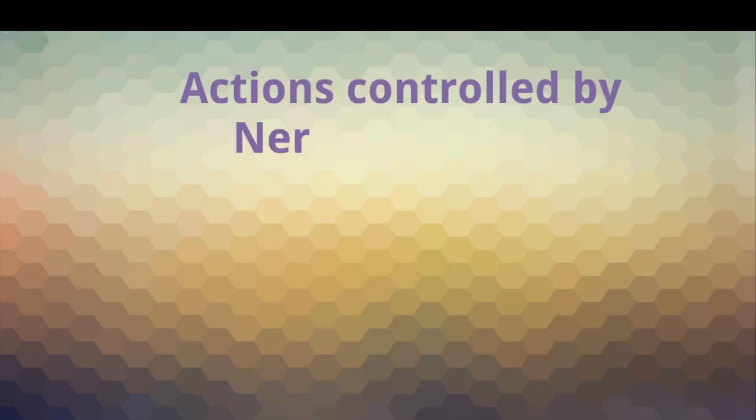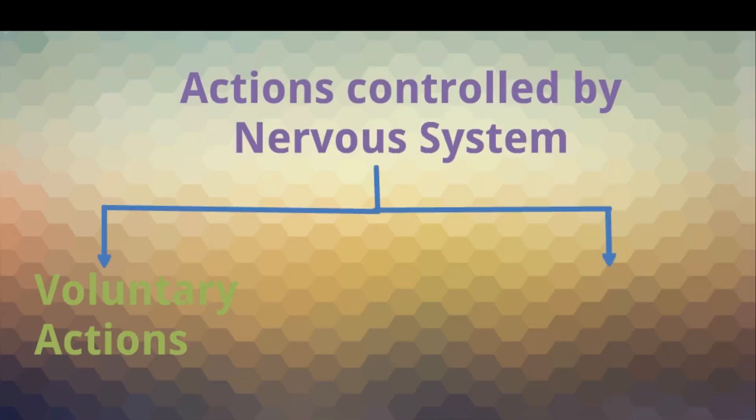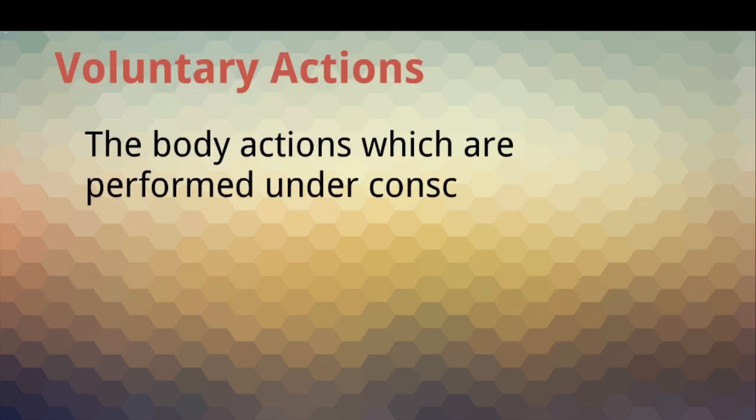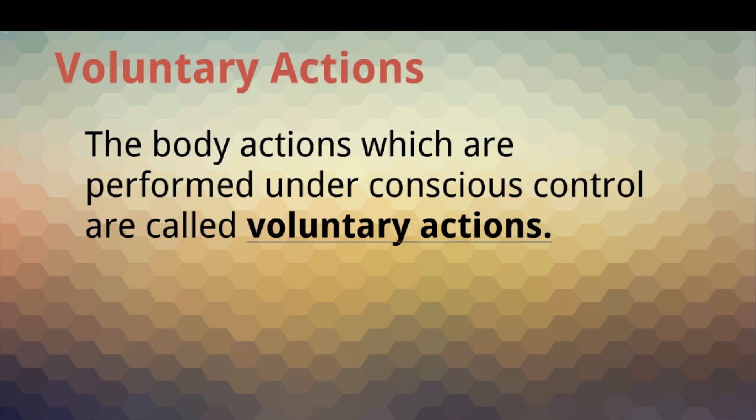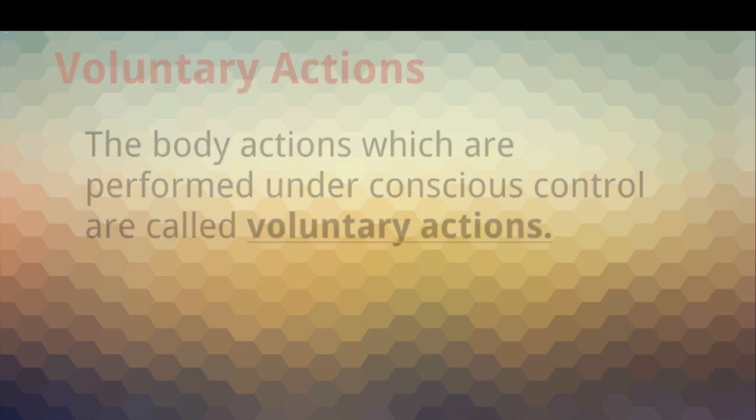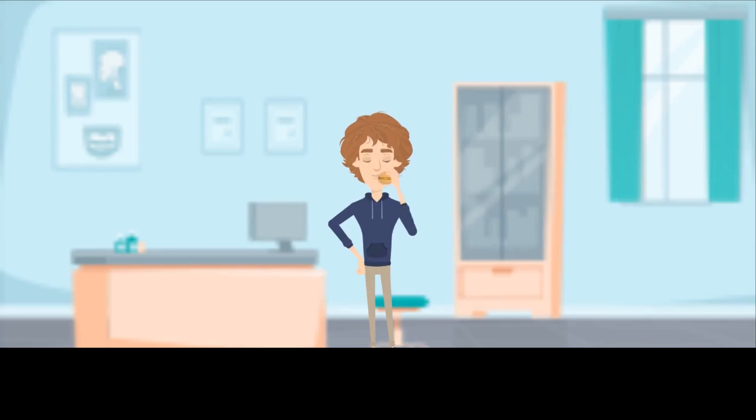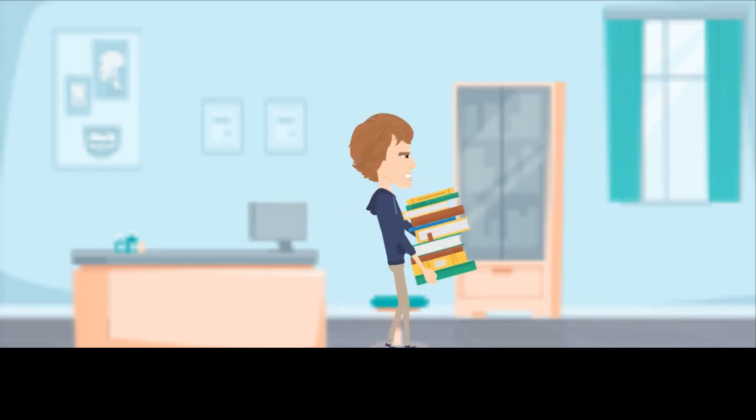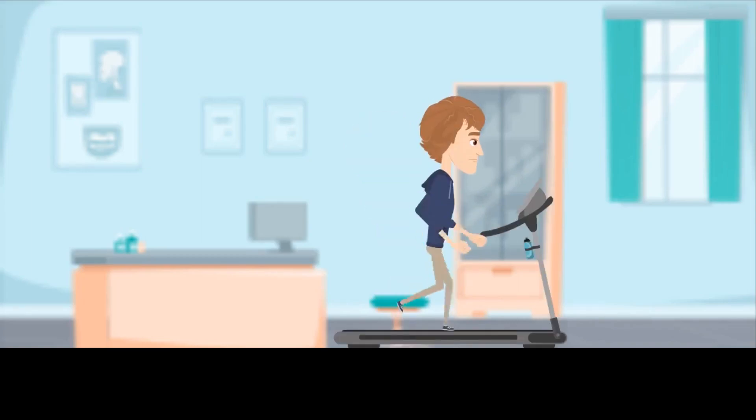Actions controlled by the nervous system are voluntary actions and involuntary actions. The body actions which are performed under conscious control are called voluntary actions, for example, speaking, eating, reading, walking, running, etc.